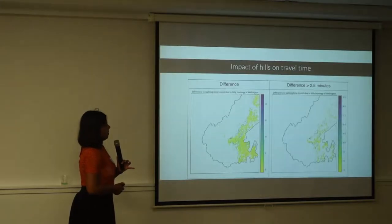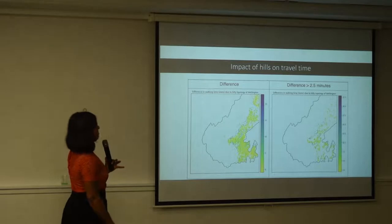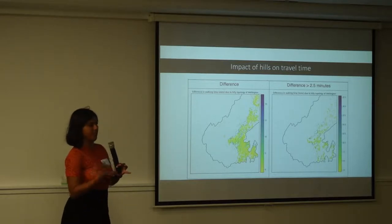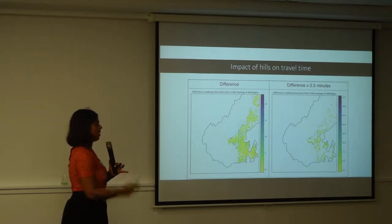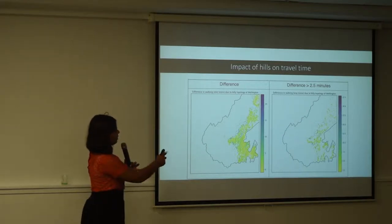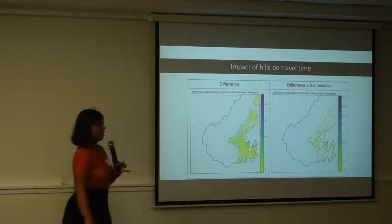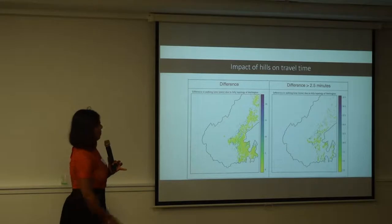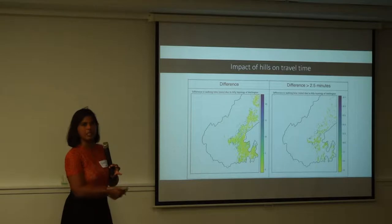But it does not factor in the hills. If you actually grab some elevation data and use that to calculate better travel times — how long it takes you to get to a playground — you see all the places around the town belt, the hilly bits of Wellington, become quite far away. That's obviously going to make travel less reasonable, presumably, for families that live there.